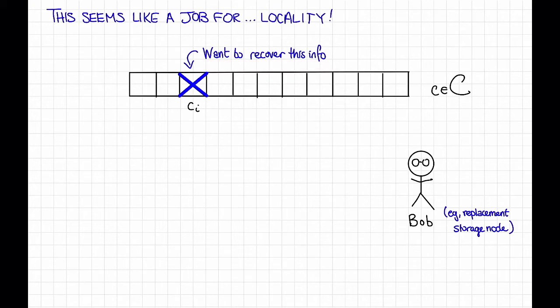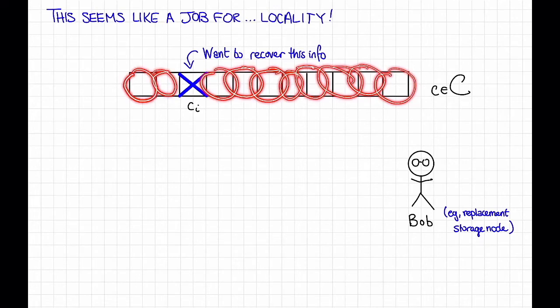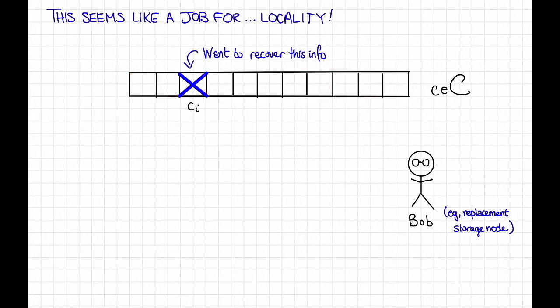How might we do this? The first way is just to correct the error like we normally would. That is, suppose that our replacement storage node or something is down here, and its name is Bob. One thing that it can do is just download information from all of these other symbols, which correspond to other storage nodes that have not yet gone down, decode the code, and recover this missing information.